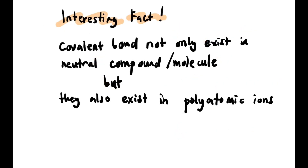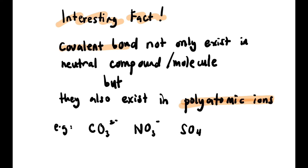Now, some interesting facts: covalent bonds don't only exist in neutral compounds or molecules — they also exist in polyatomic ions. For example: CO₃²⁻, NO₃⁻, and SO₄²⁻. Let's check the first example, CO₃²⁻.